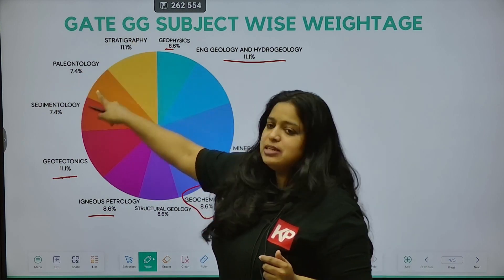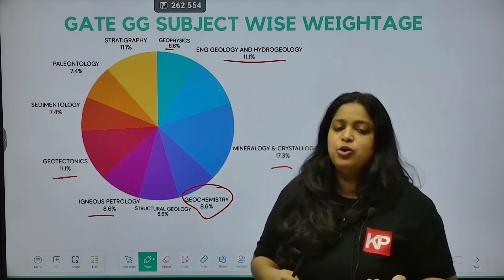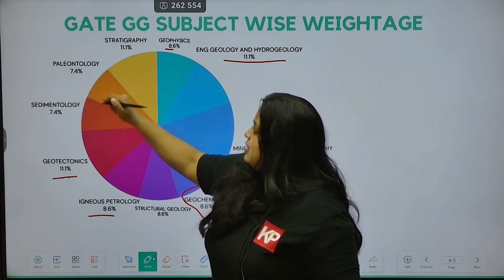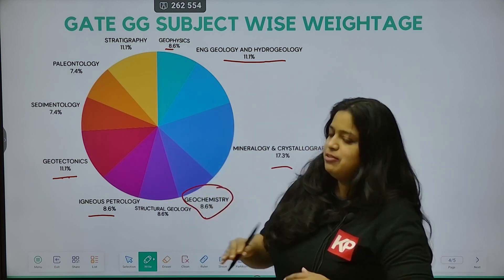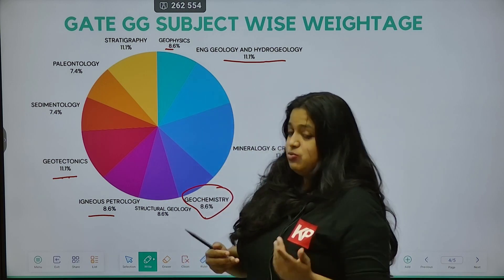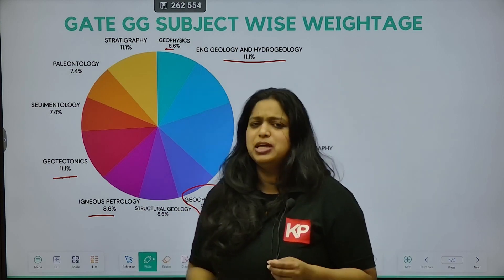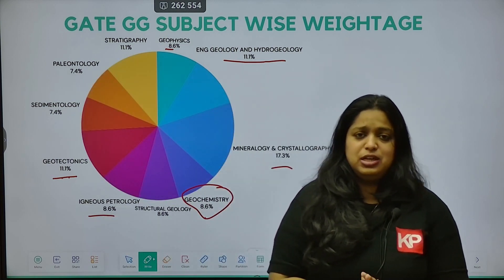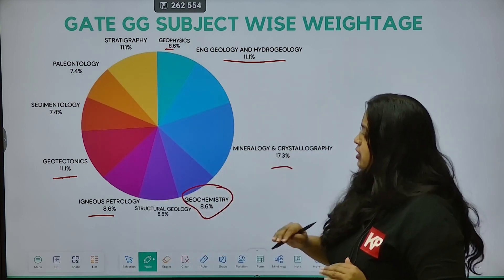Looking at Stratigraphy at 11%, Paleontology at 7.4%, and Sedimentology at 7.4% — these weightages are high, but these three are mainly theoretical topics. Paleontology and Stratigraphy are strictly theoretical. Sedimentology may have one or two numerical questions, but they will be very easy. So these three are strictly theoretical, and you need good theoretical knowledge to score marks from them.